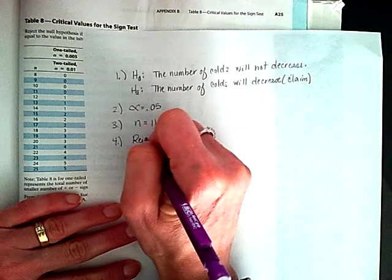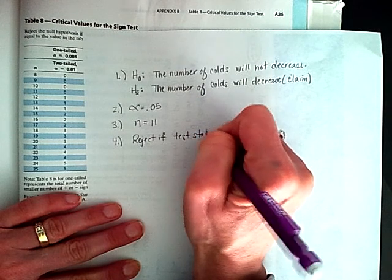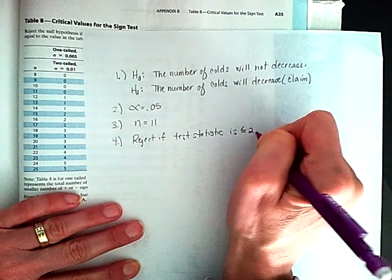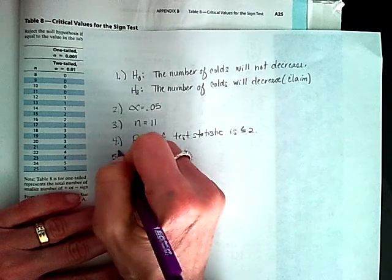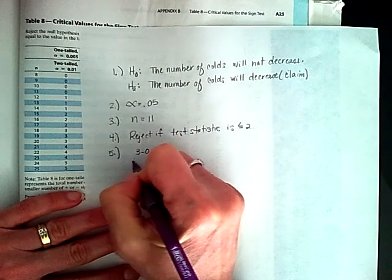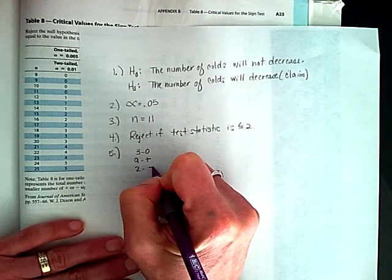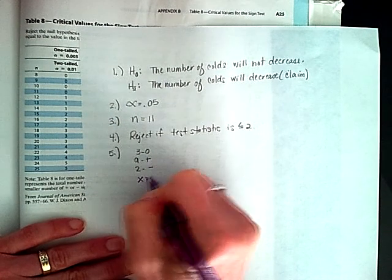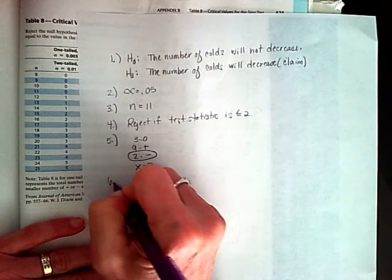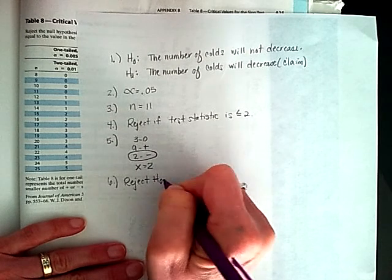So we're going to reject if our test statistic is less than or equal to 2. Step 5, I've already calculated all of our values. We had 3 neutrals, we had 9 positives, and we had 2 negatives. So that's going to make our x equal to 2. That means that we are going to reject our null hypothesis.